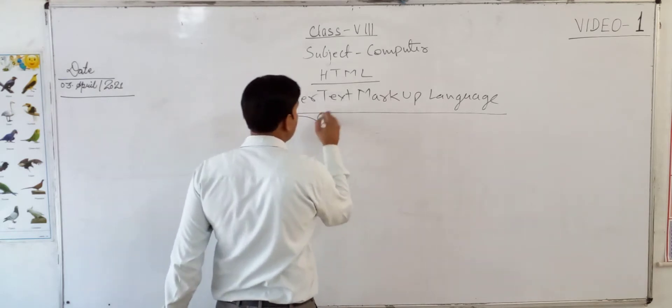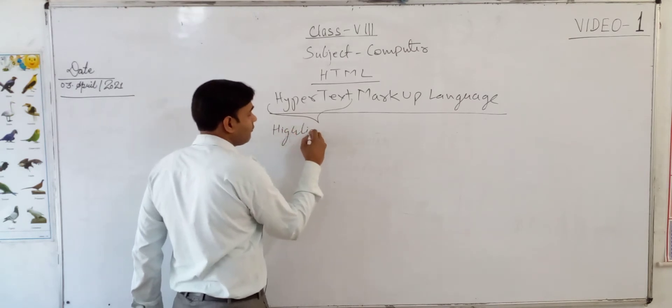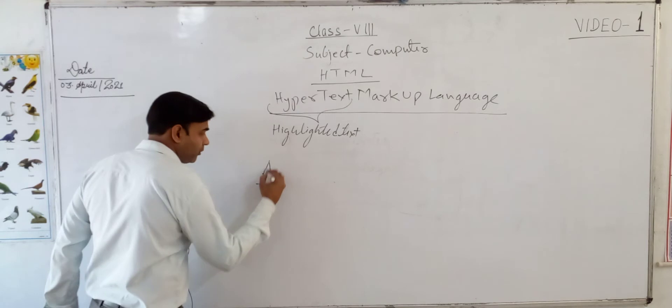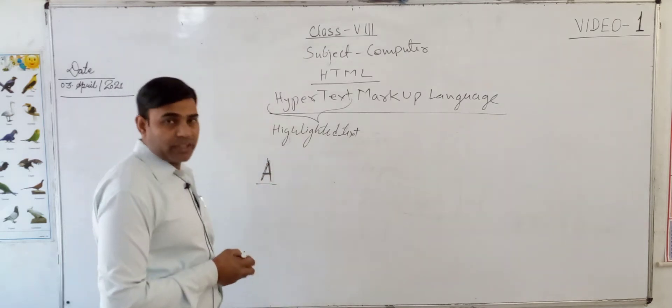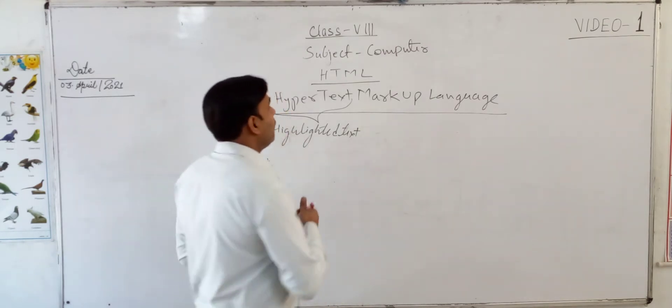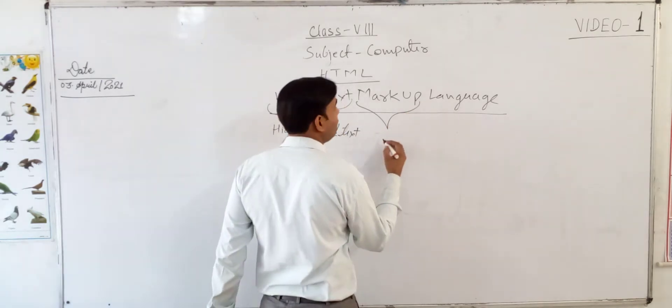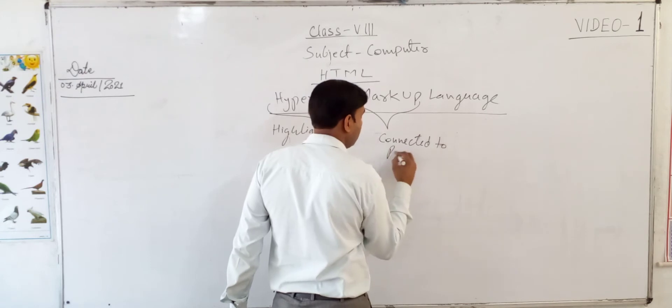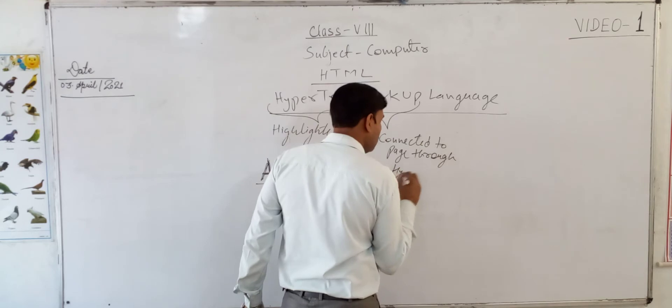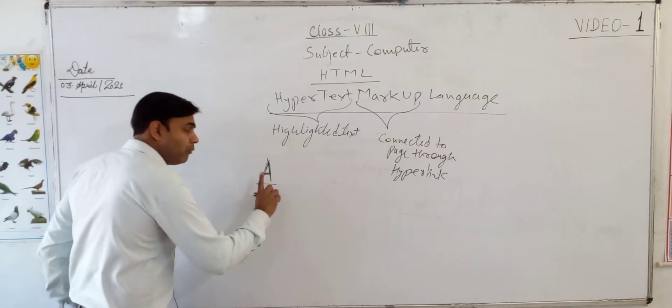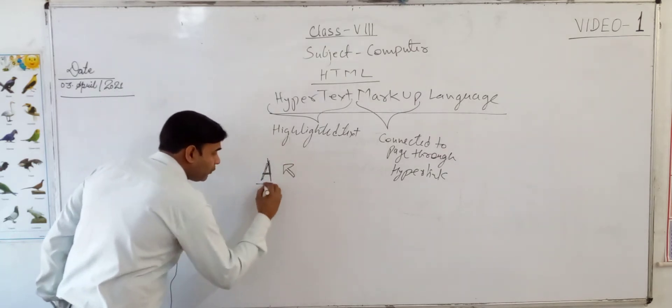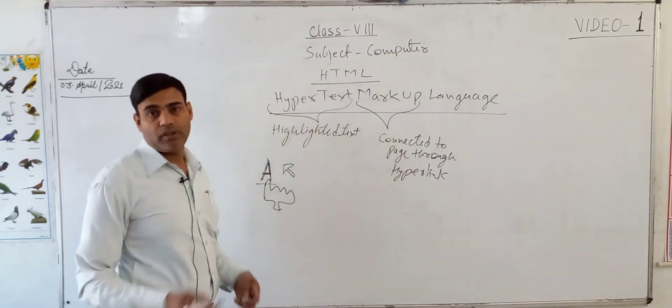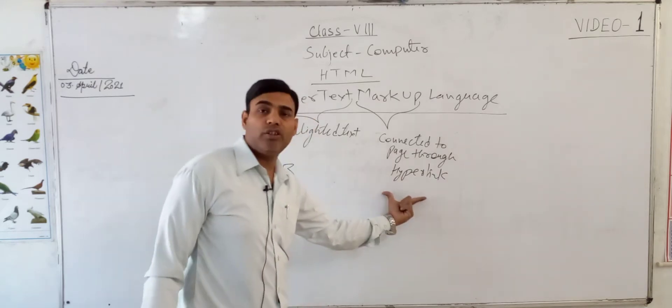Now hypertext - hypertext means highlighted text. Suppose I am taking here character A, underline, bold, highlight. That is highlighted text. Markup means it will be connected to some other page through hyperlink. When you take your mouse cursor on A, the mouse cursor will change from this shape to hand-like shape. You can click on this and as soon as you click on this, it will go to some other web page.